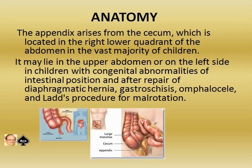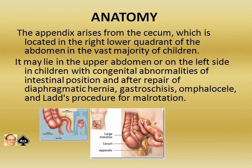Anatomy. Let us see the anatomy of the appendix itself. The appendix arises from the cecum, which is located in the right lower quadrant of the abdomen in the vast majority of children, as long as the cecum is on the right side. It may lie in the upper abdomen or the left side in children with congenital abnormalities in internal position and after repair of diaphragmatic hernia, gastroschisis, omphalocele, and Ladd's procedure for malrotation. In the picture, I have shown the gross anatomy of the cecum, appendix, and terminal part of the ileum, and the relationship between the three organs.